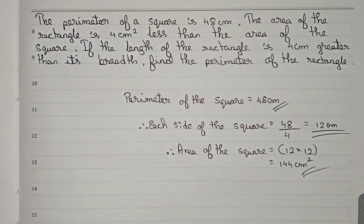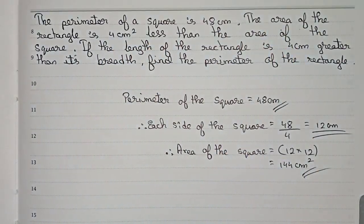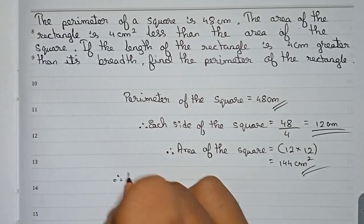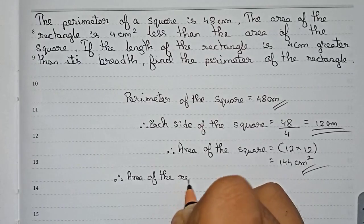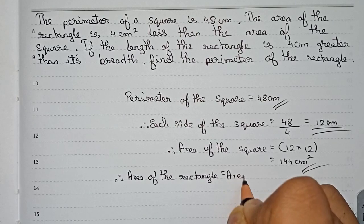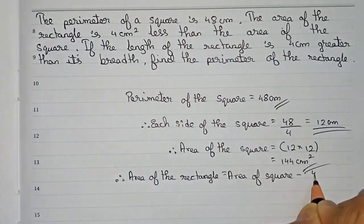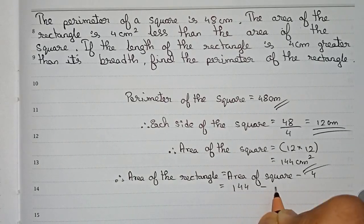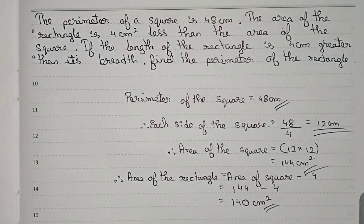Now in the equation it is mentioned that the area of the rectangle is 4 centimeter square less than the area of the square. Therefore, the area of the rectangle is equal to the area of the square minus 4. The area of the square is 144, then minus 4, so 140 centimeter square. This is the area of the rectangle.